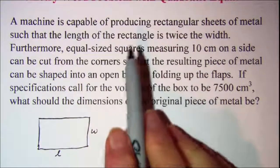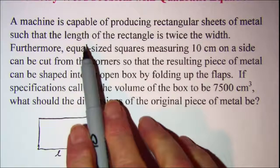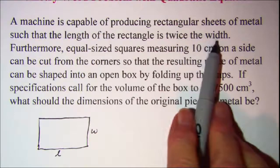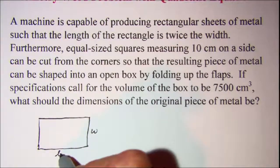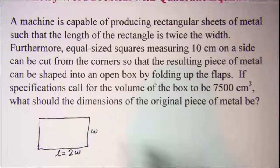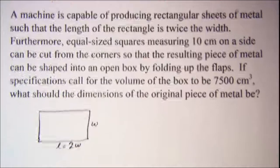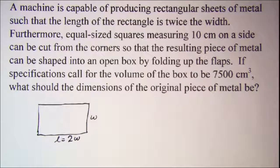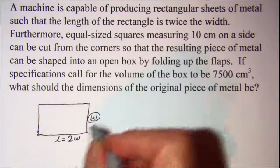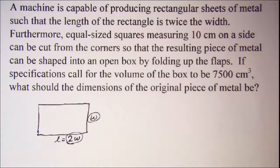The first sentence says that the length is twice the width, so the length — this one — is twice the width. So now instead of having two variables, L and W, I only have the one variable: W and 2W. So W is my variable.